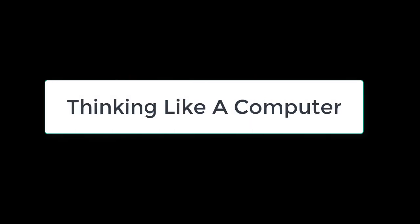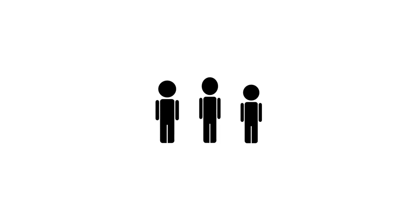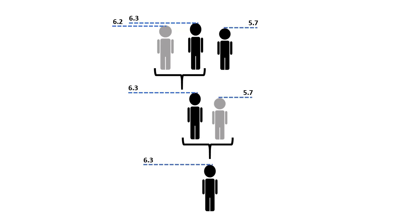Every instruction we give a computer has to be very detailed. For the next few minutes we're going to practice thinking like a computer, going over some real-world concepts so we can identify them better when we encounter them in programming. Computers solve problems programmatically - they follow a series of sequential instructions and iterations. For example, when confronted with a group of people and asked who is the tallest, a computer will measure every individual and compare them to find the tallest person.